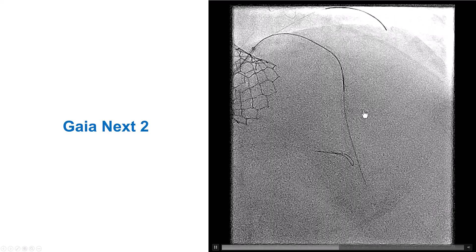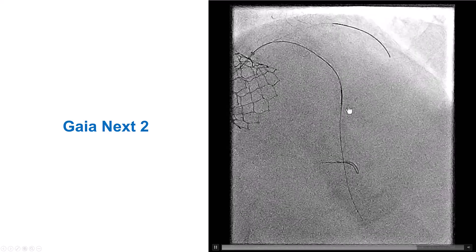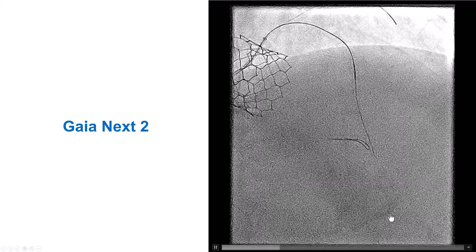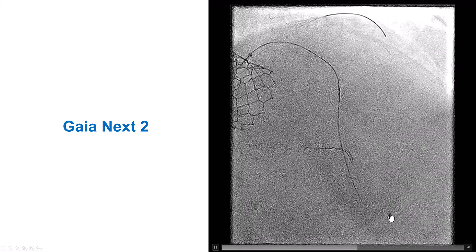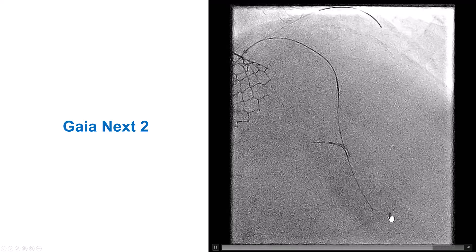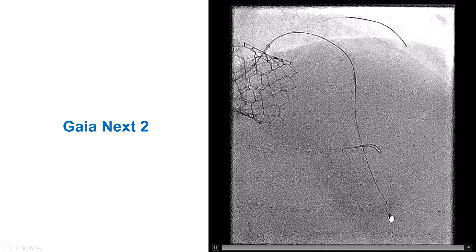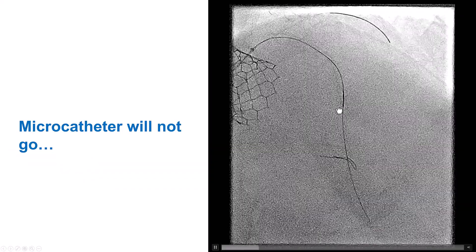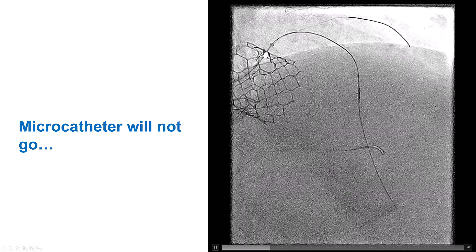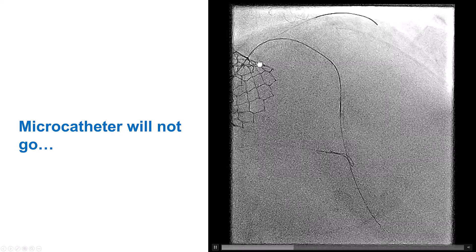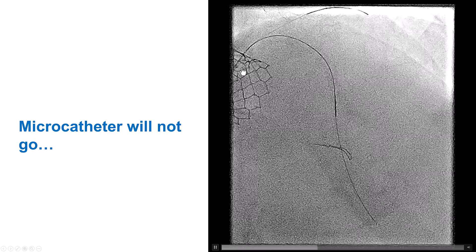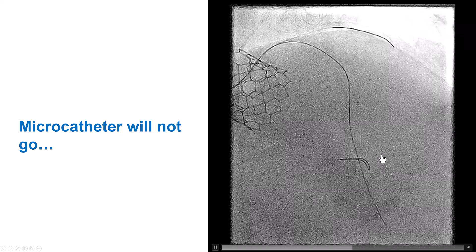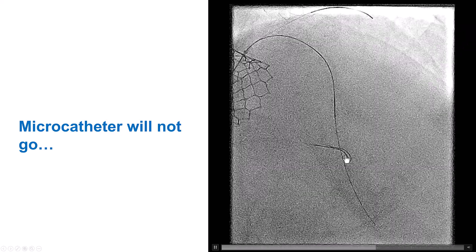We then changed to a Gaia Next 2 wire, and the wire actually easily crossed into the distal LAD, which we thought was excellent and close to the end of the case — but we were wrong, because we were unable to advance a microcatheter, due to poor guide catheter support. The Trapliner did not give us enough support to advance the Turnpike LP to the distal LAD.